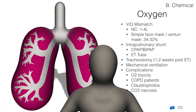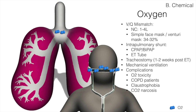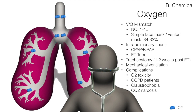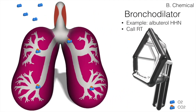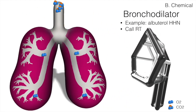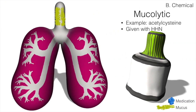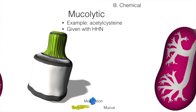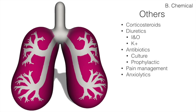For chemical interventions: oxygen therapy — the device depends on how much oxygen is needed. Nasal cannula delivers 1 to 4 liters; then progress to simple face mask or Venturi mask. Be aware of complications such as oxygen toxicity, especially for COPD patients. Bronchodilators dilate the airways. Mucolytics liquefy secretions. Other medications include corticosteroids, diuretics to reduce fluid, antibiotics for infection, pain management, and anxiolytics.